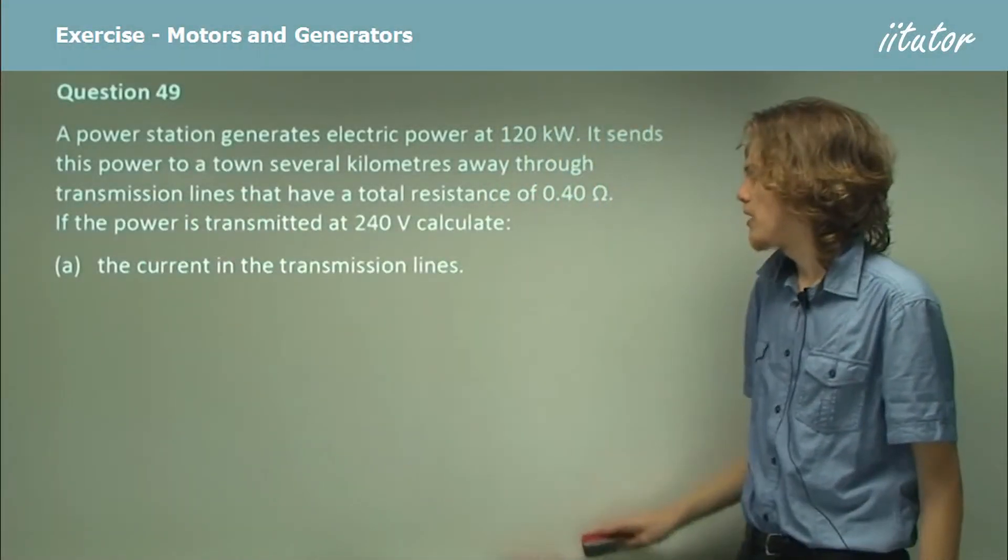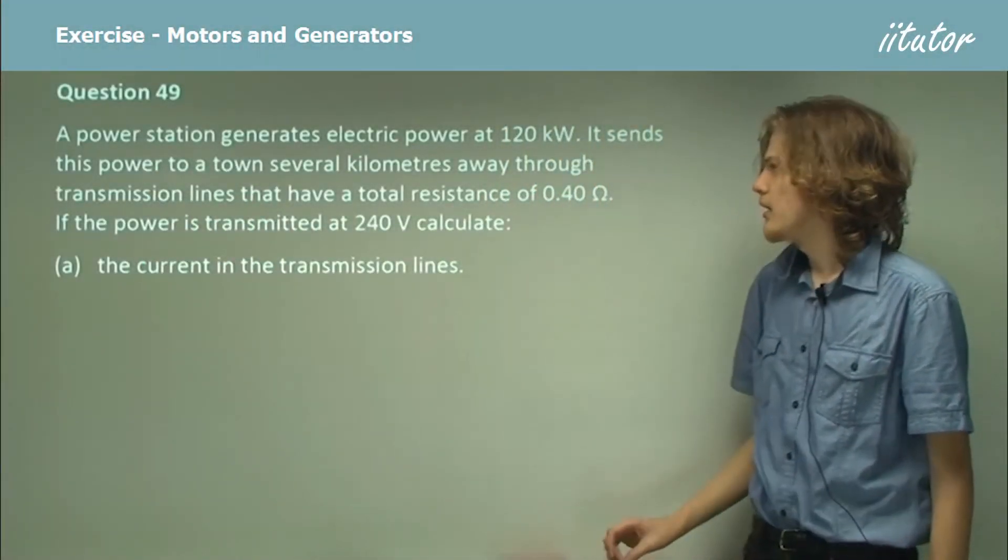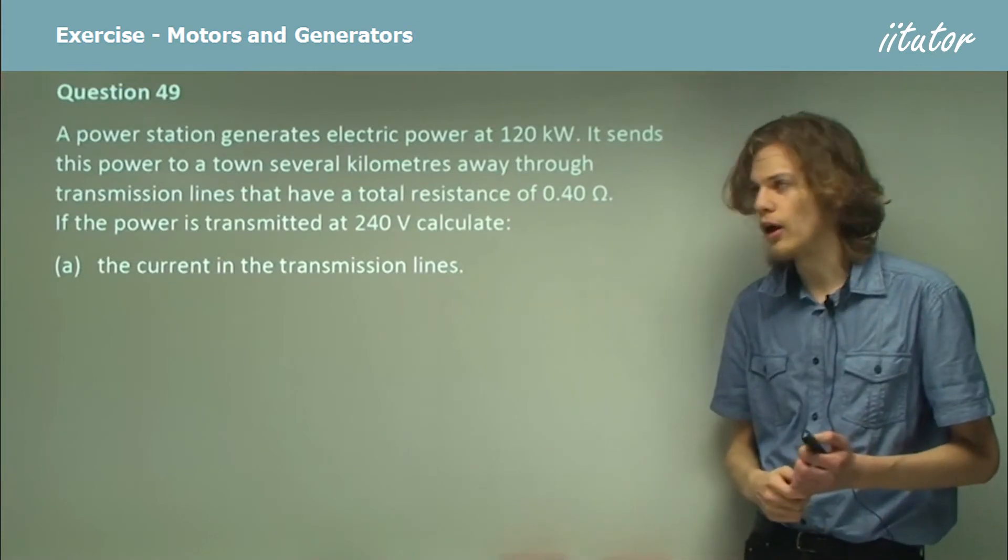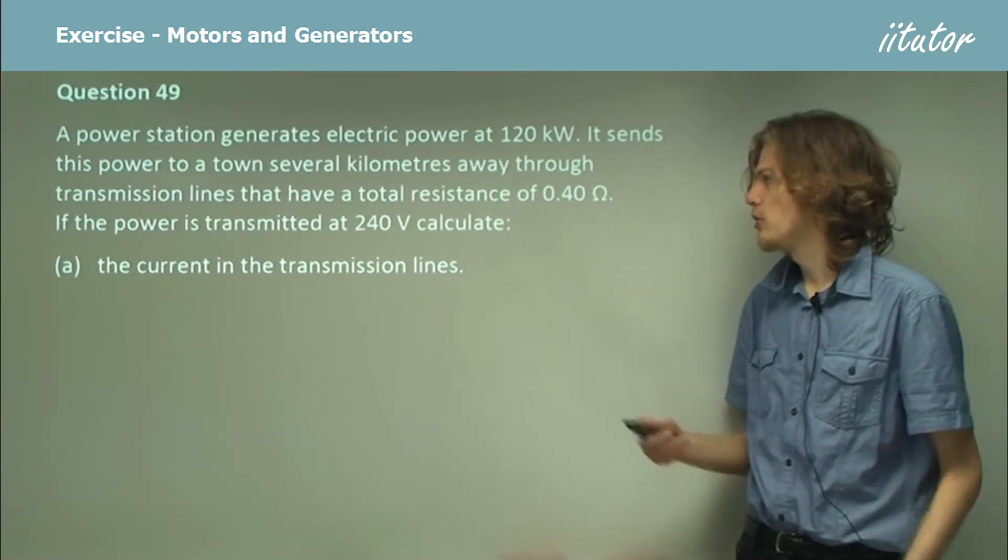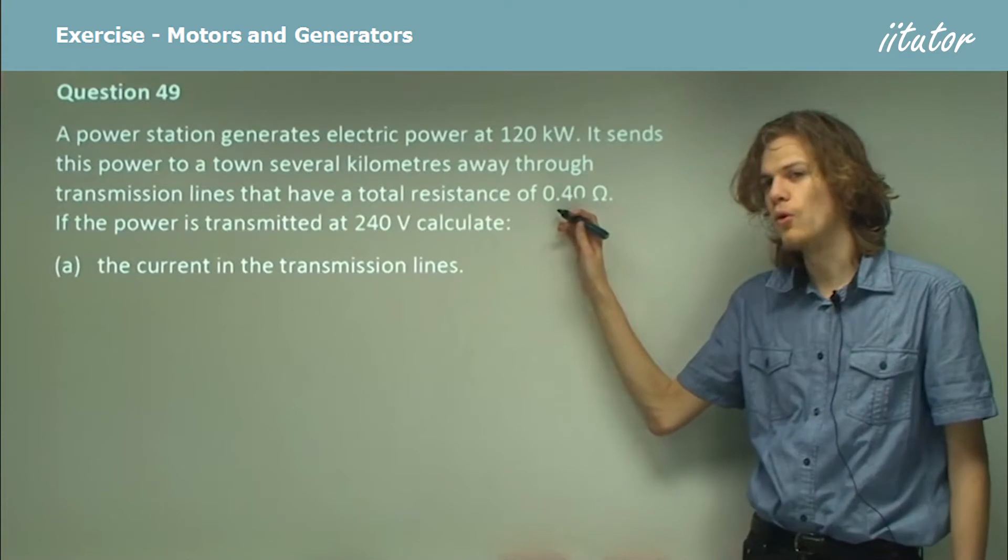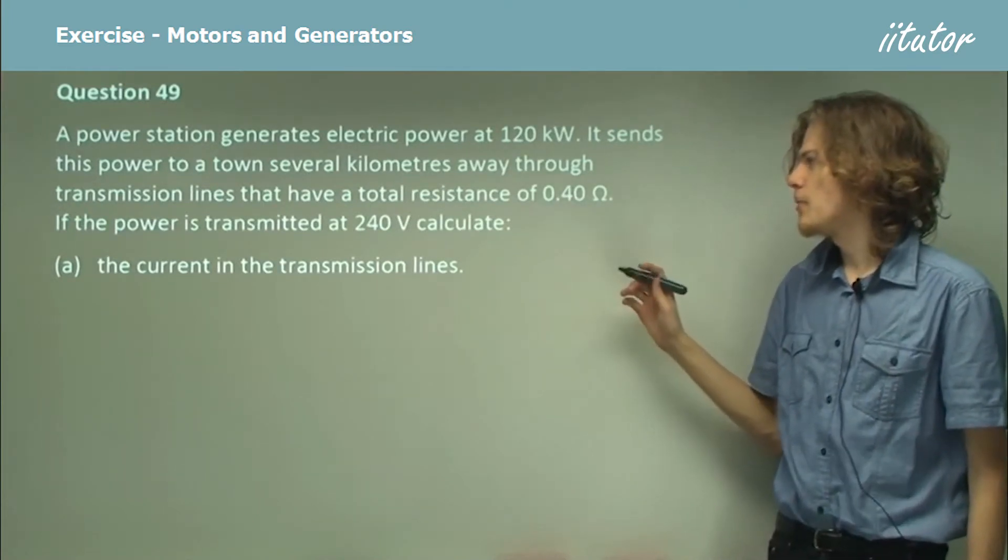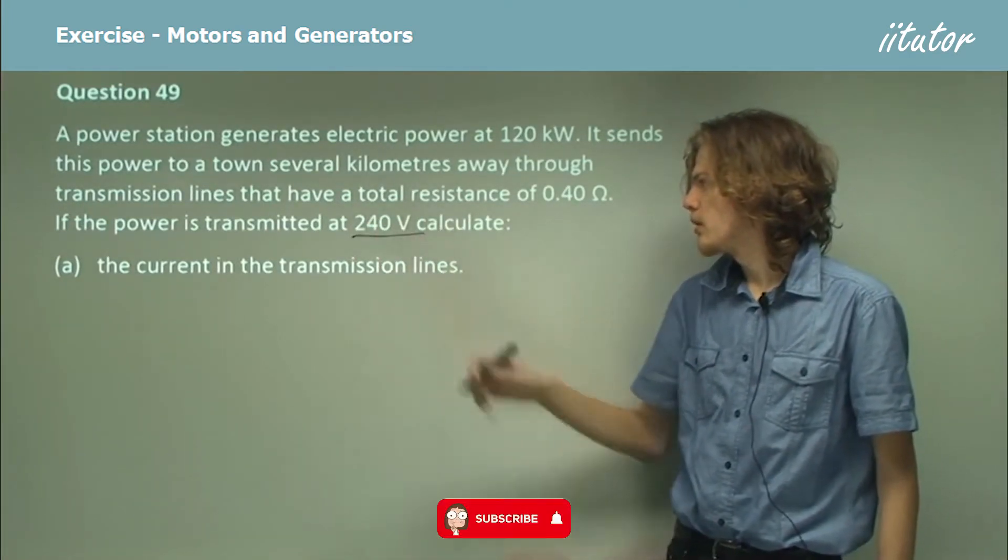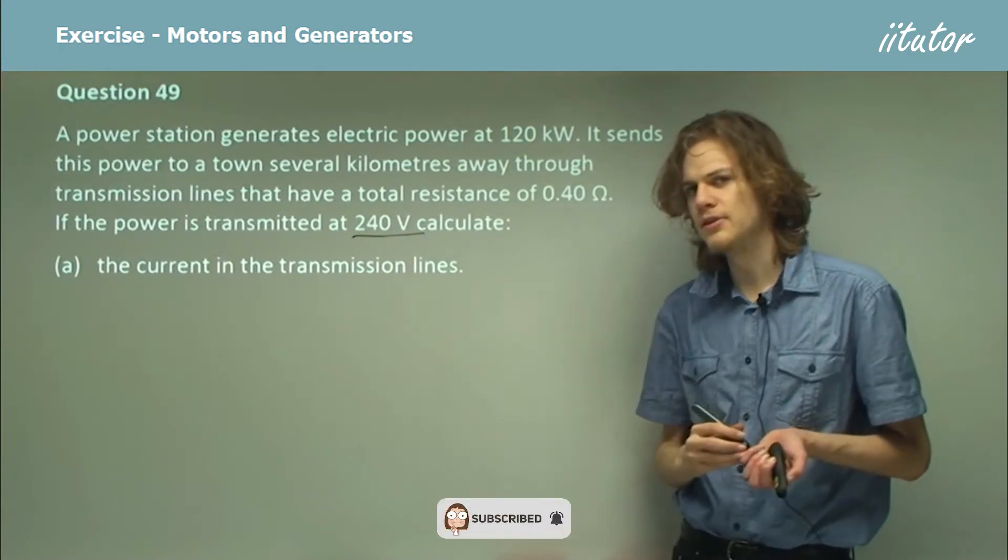A power station generates electric power at 120 kilowatts. It sends this power to a tower several kilometers away through transmission lines that have a total resistance of 0.4 ohms. If the power is transmitted at 240 volts, calculate the current in the transmission lines.